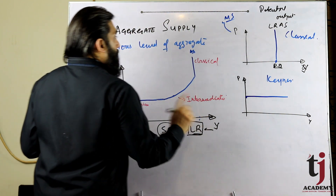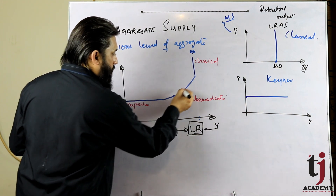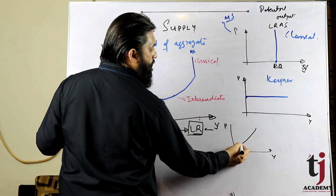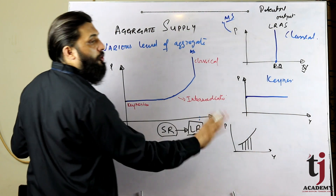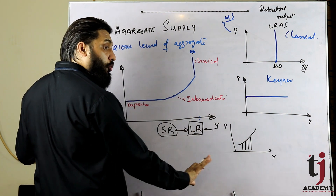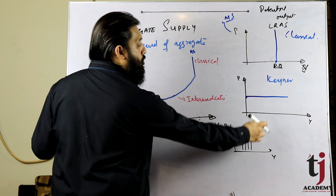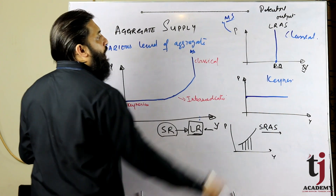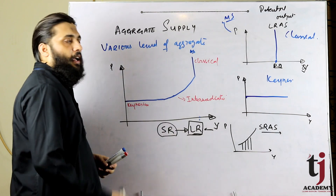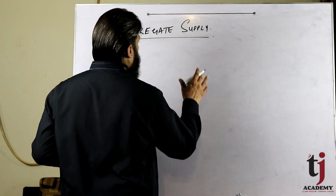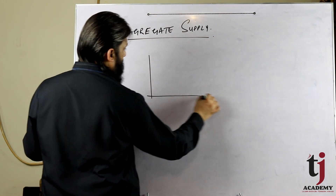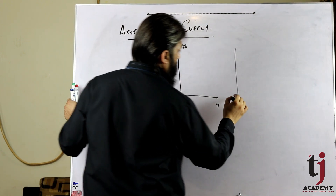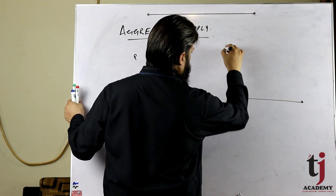Potential output के ऊपर produce करना possible नहीं है, अगर होगा भी तो temporary होगा। Intermediate range की curve को देखें — यहाँ price भी बढ़ रही है और output बढ़ने की possibility भी है। जब कुछ change होने की possibility हो और 100% adjustment नहीं हुई, तो यह short run aggregate supply curve है।